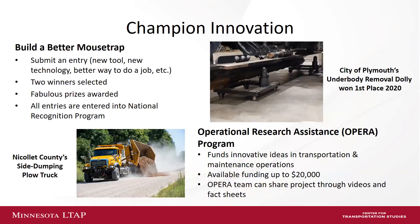We also champion innovation through two programs. The Build a Better Mousetrap program lets you submit entries on everyday inventions that made your job easier or more efficient — two winners are selected each year and all entries go into the national recognition program. We also have our Operational Research Assistance Program, known as OPERA, which provides funding up to twenty thousand dollars for more ambitious innovation projects.